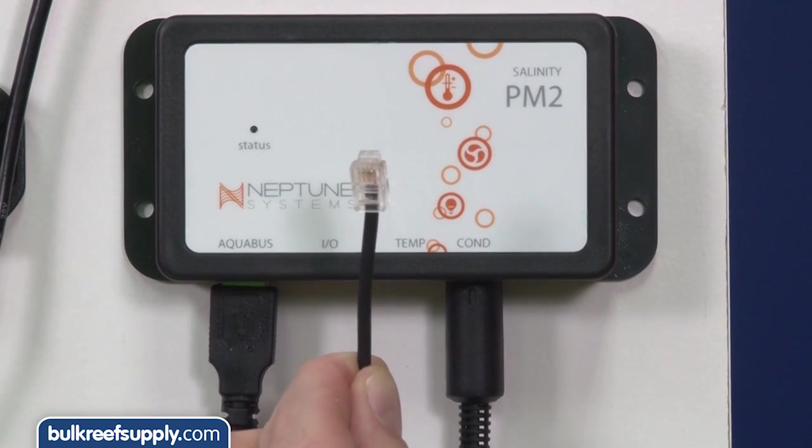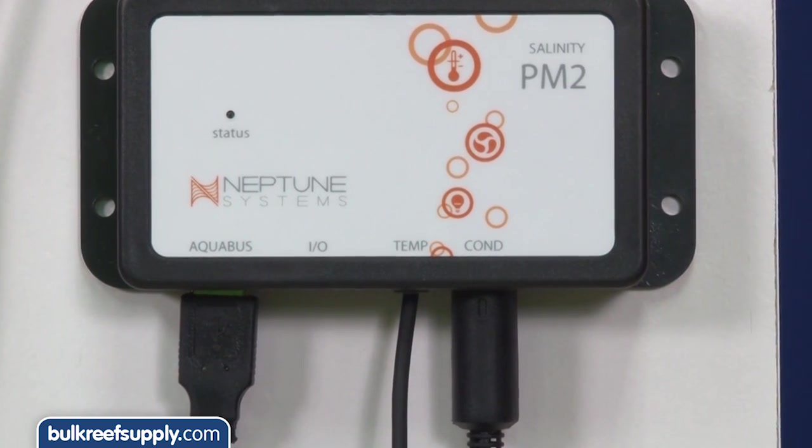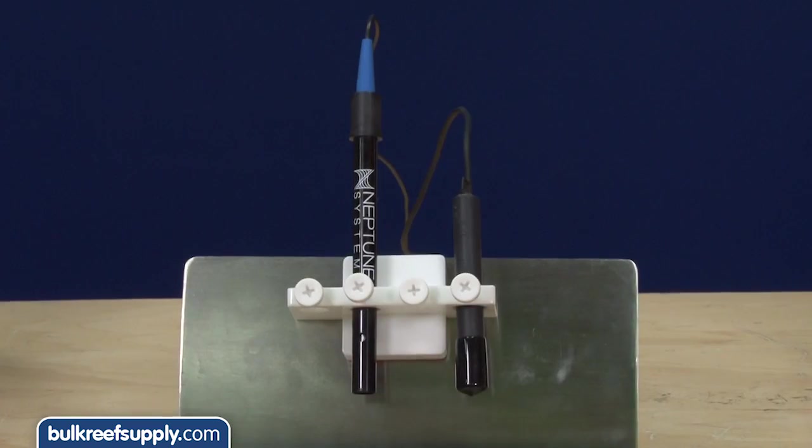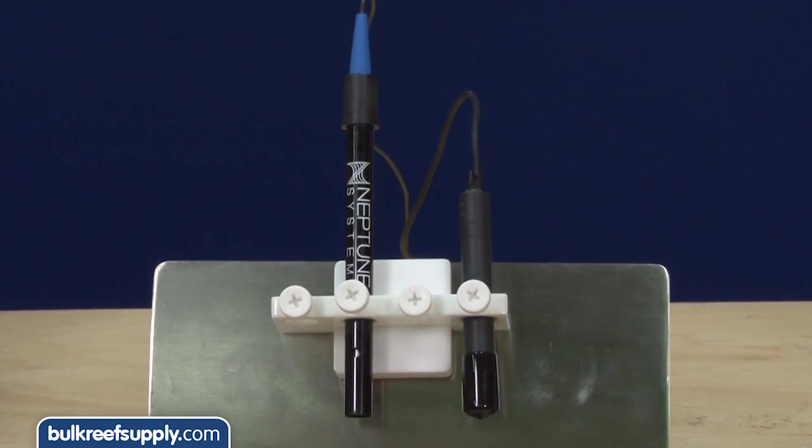Lastly, there is a slot for an additional temp probe. If you add a second temp probe here, it will increase the accuracy of your conductivity probe. This is optional and the conductivity probe is pretty accurate without it, but I would wager it is something that most people do.